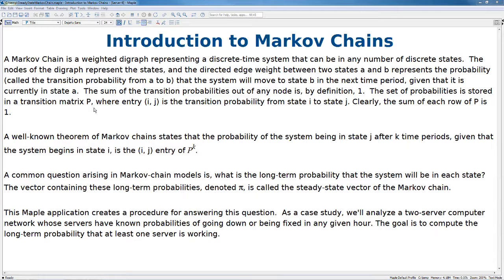The sum of the transition probabilities out of any node is, by definition, 1. The set of probabilities is stored in a transition matrix P, where entry i,j is the transition probability from state i to state j. Clearly, the sum of each row of P is 1.